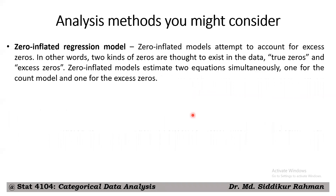Another model is called zero-inflated regression. Zero-inflated models attempt to account for excess zeros in the data. Two kinds of zeros are thought to exist: true zeros and excess zeros. Zero-inflated models estimate two equations simultaneously — one for the count model and one for the excess zeros. Can anyone give me an example where you might find a lot of zeros in your data?